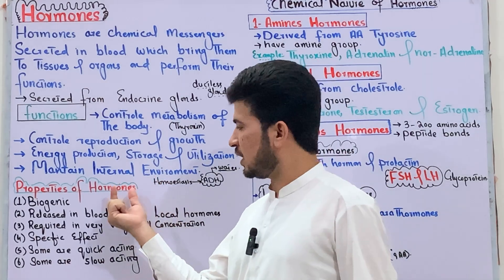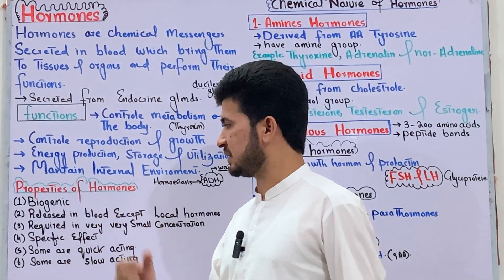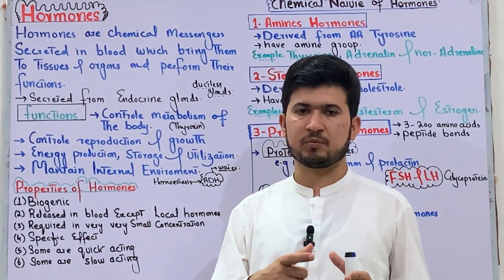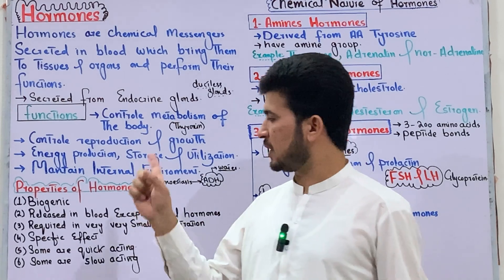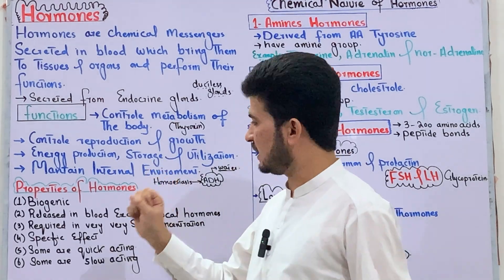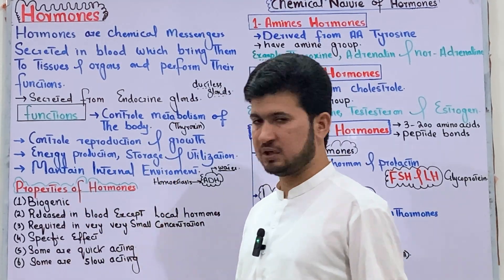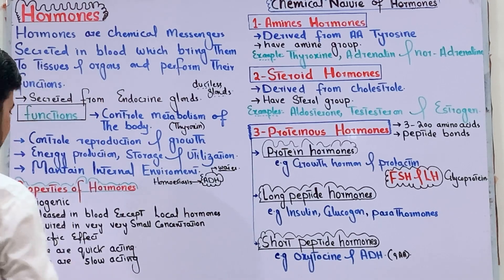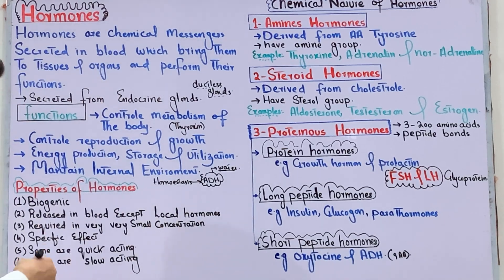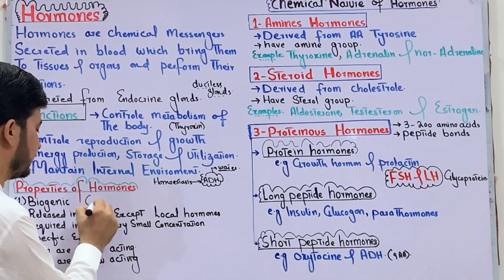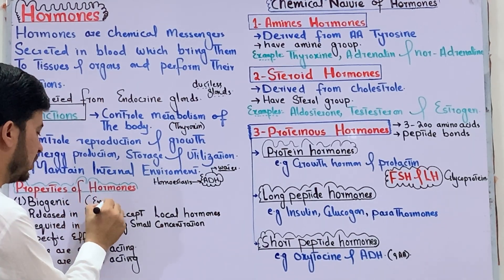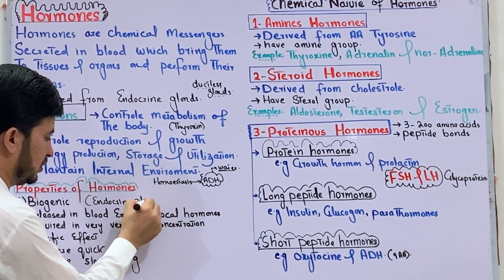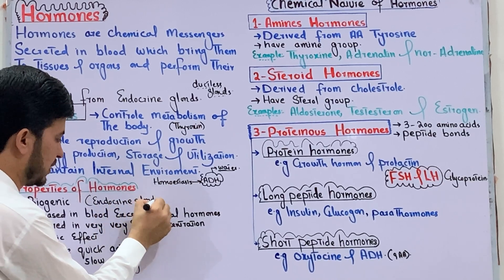Now let us discuss the common properties of hormones. The first property of hormones is that they are biogenic, meaning they are secreted from endocrine glands.